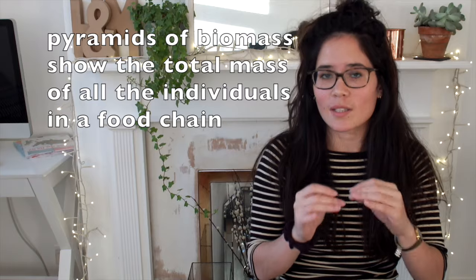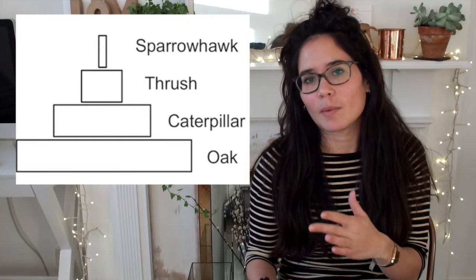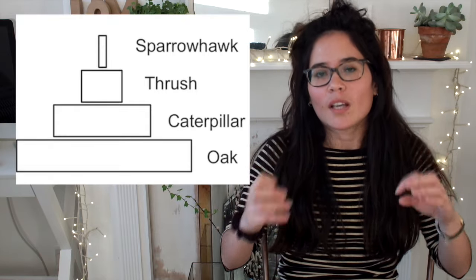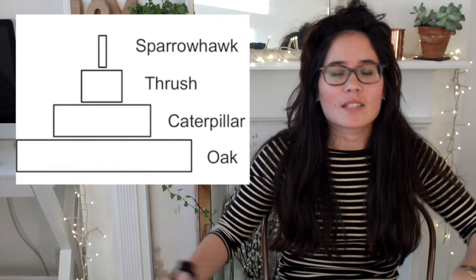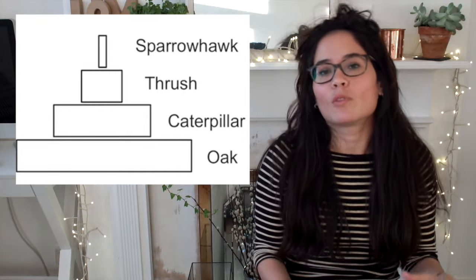Pyramids of numbers can produce strange shapes, so instead we use a pyramid of biomass. A pyramid of biomass shows the total mass of organisms at each trophic level, irrespective of numbers. It gives a much better pyramid shape because, based on mass, producers always have the largest mass, greater than the primary consumers, and primary consumers have a larger mass than the secondary consumers.